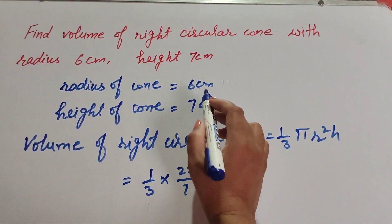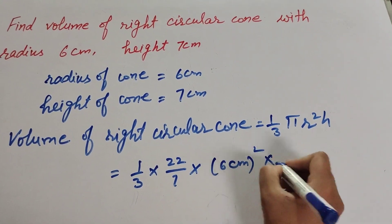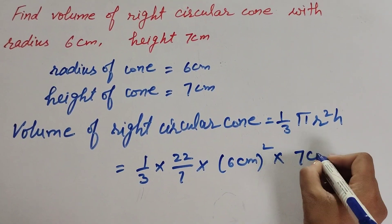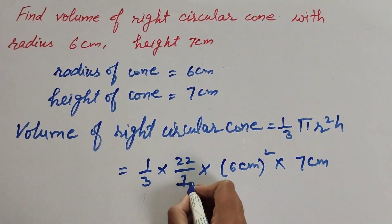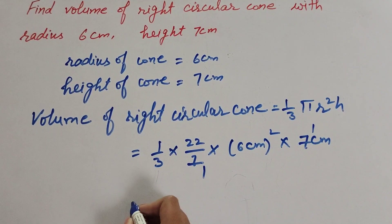squared - r is radius equal to 6 centimeters - so 6 centimeters squared times height which is 7 centimeters. The 7 in denominator and 7 in numerator both cancel. So it is